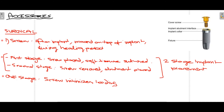Now talking about accessory structures: the first surgical accessory is the cover screw. After placing the implant in the bone, the cover screw is placed on top of the fixture to assist during the healing period so that osseointegration can occur. In a two-stage procedure, the soft tissue is sutured over the screw; in the second stage, the screw is removed and the abutment placed. In a one-stage procedure, the screw functions to minimize loading on the implant.